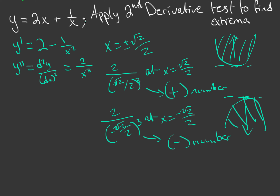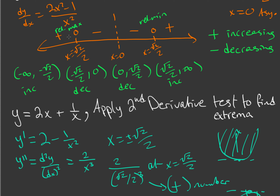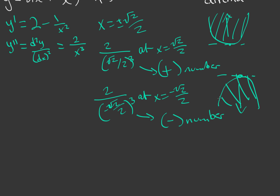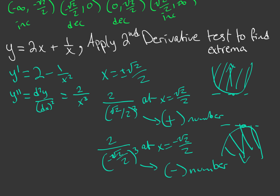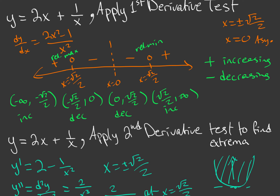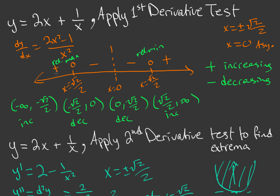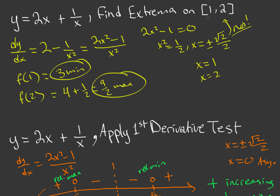This matches our first derivative test: concave down corresponds to going from increasing to decreasing (relative max), and concave up corresponds to going from decreasing to increasing (relative min). So we used the second derivative test to confirm what the first derivative test already told us. The first derivative test also described our four intervals as increasing or decreasing, and earlier we found the absolute extrema on the closed interval [1, 2] by evaluating the function at the endpoints.